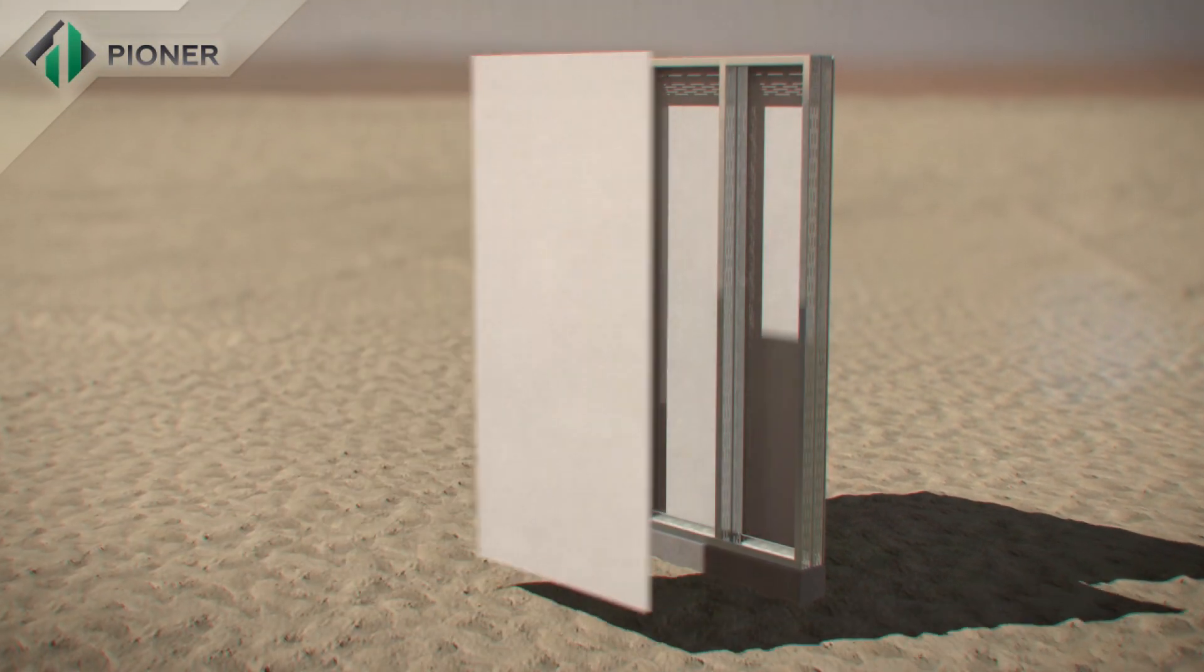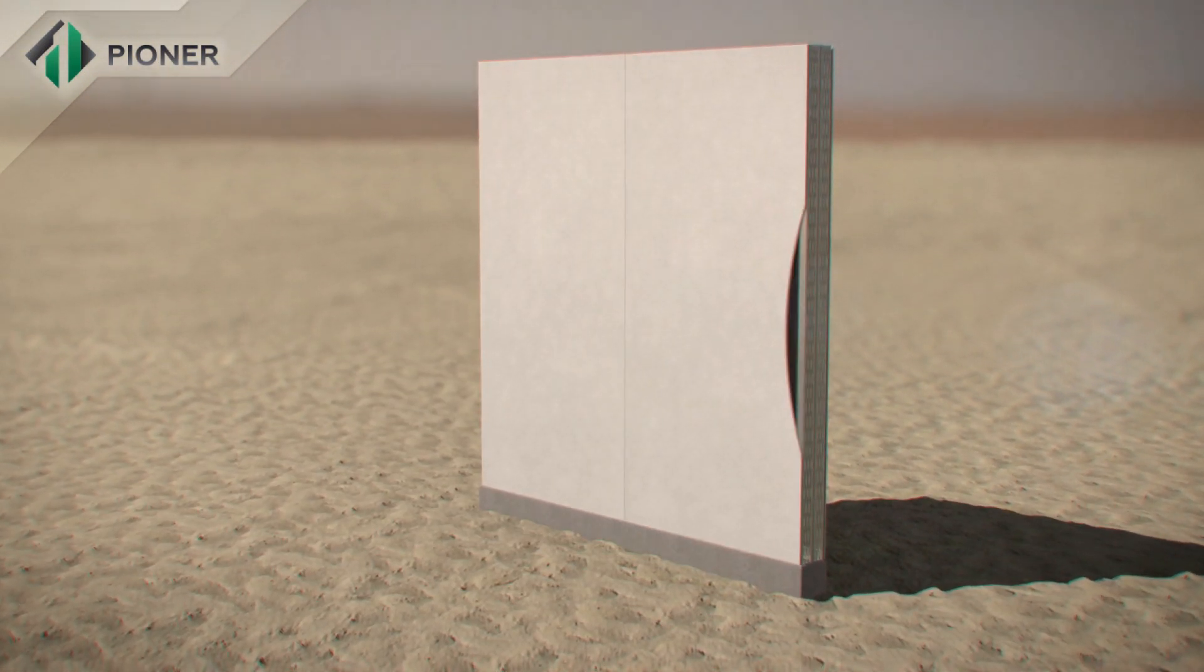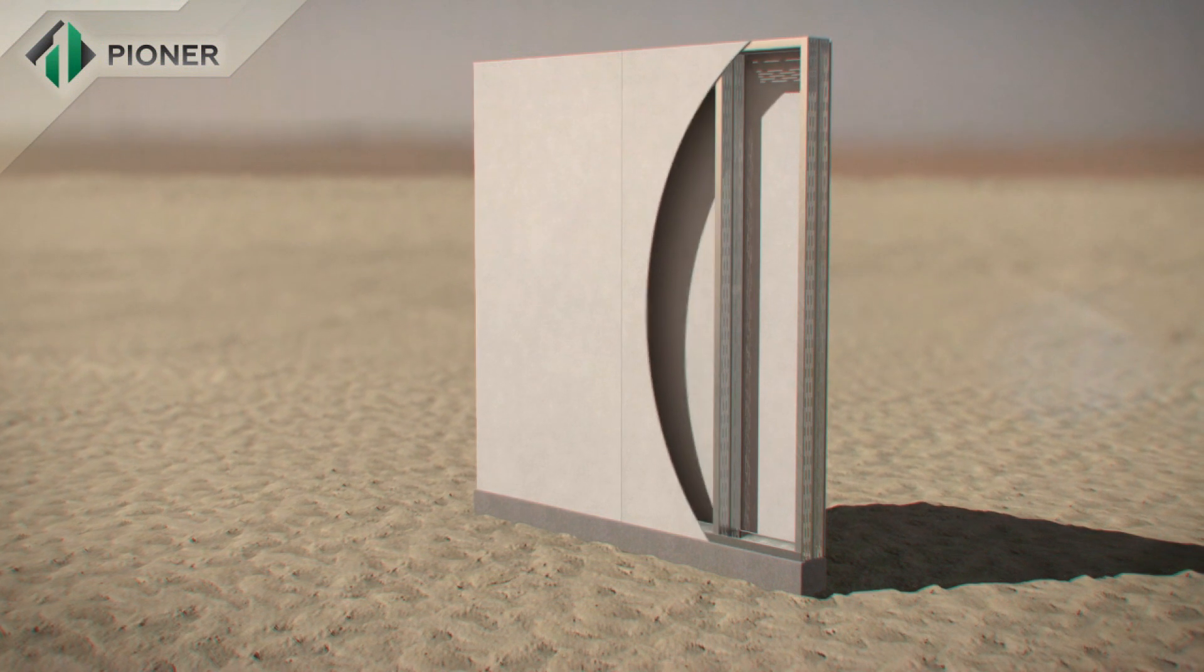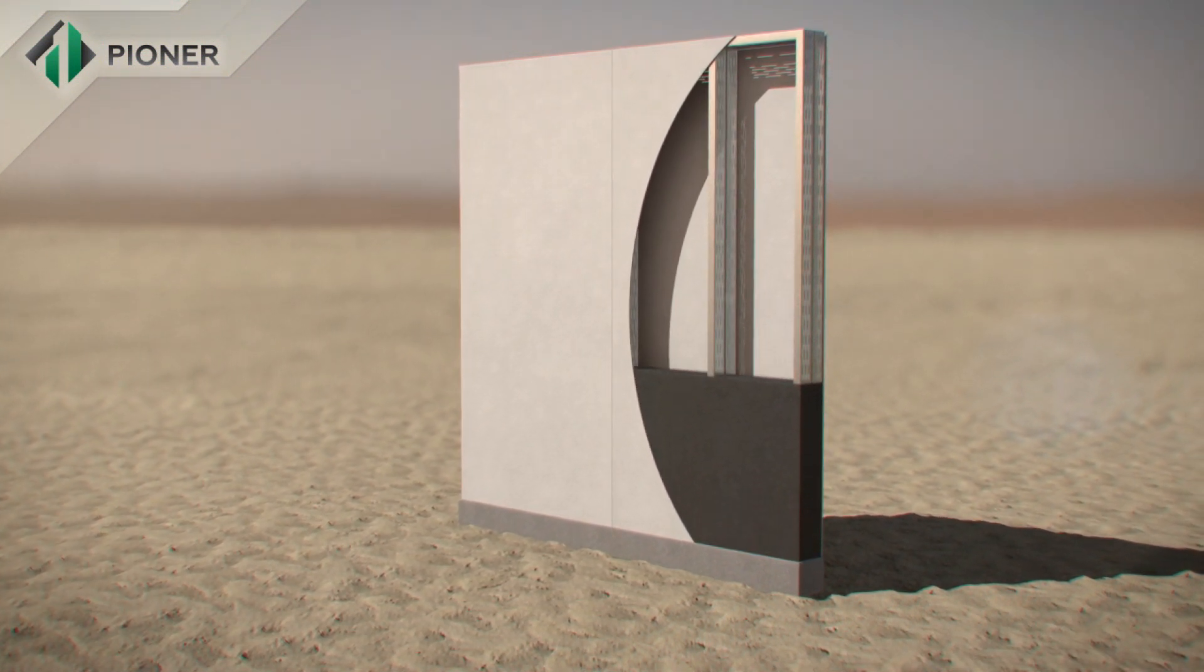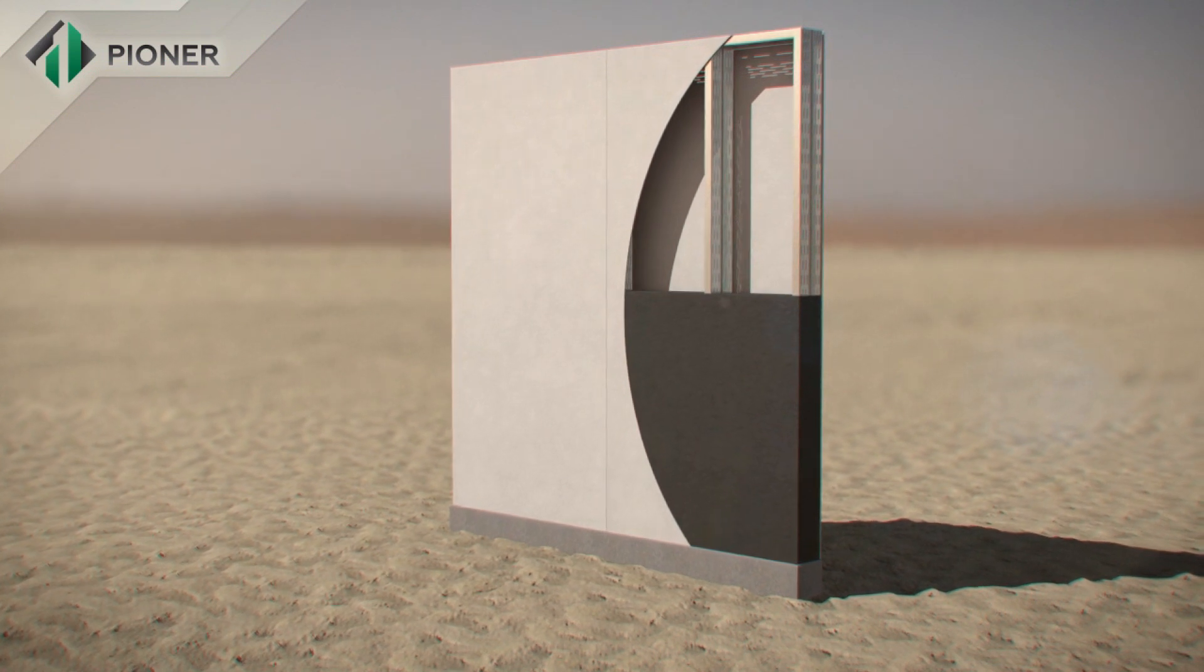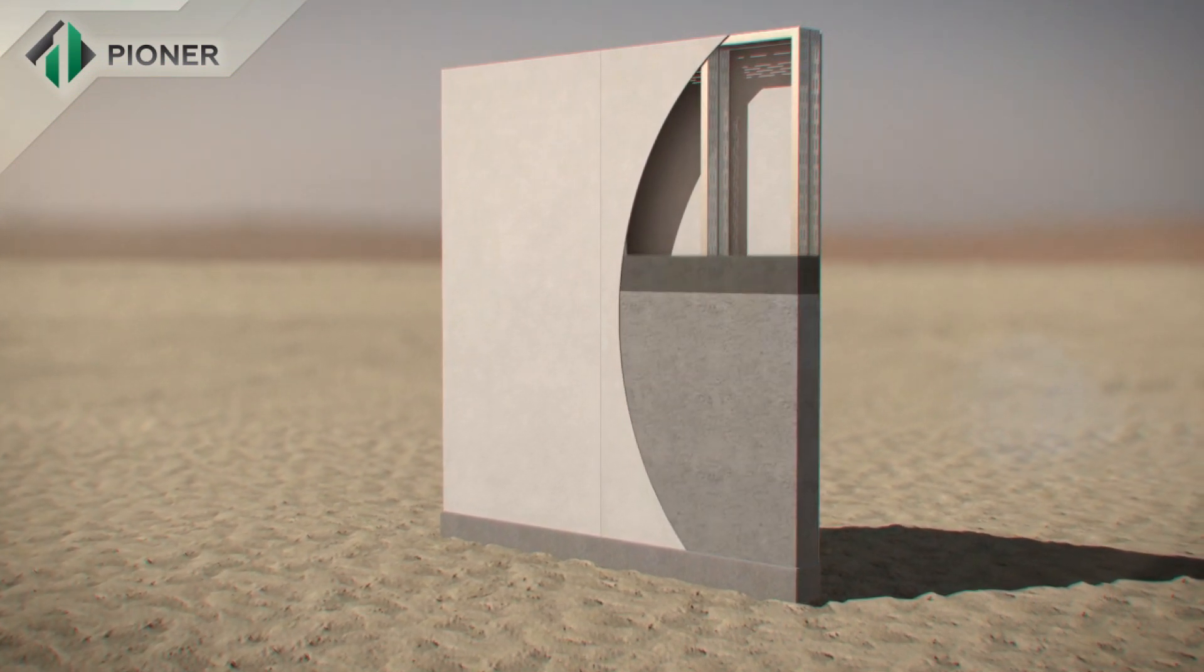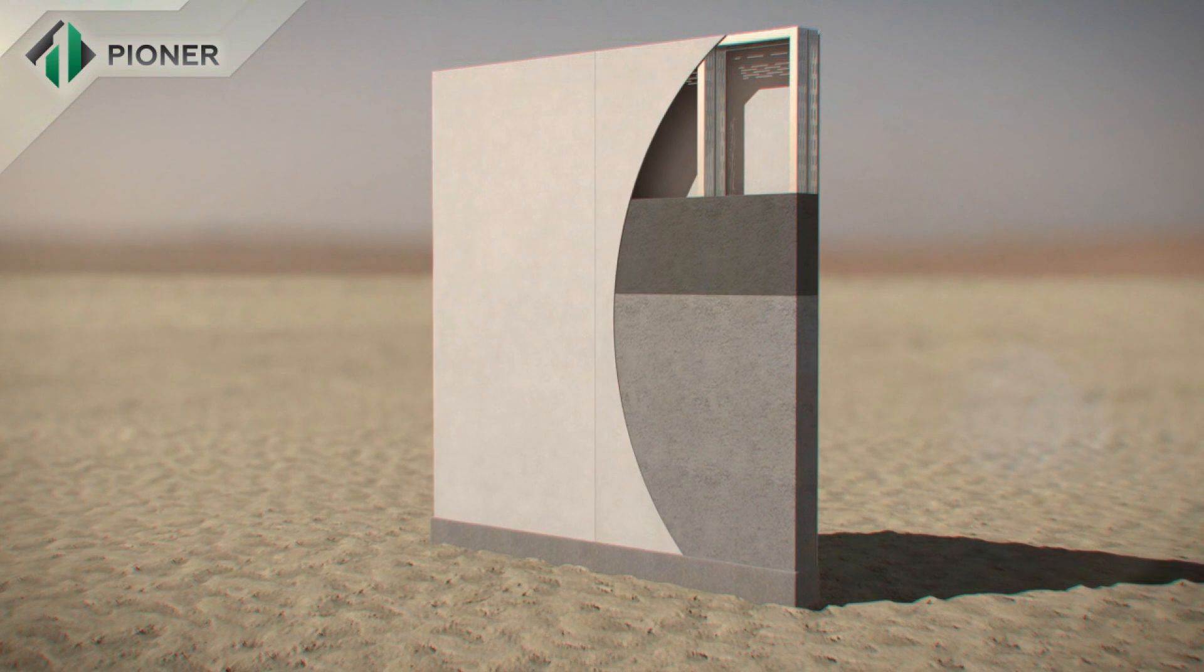A metal frame composed of bent galvanized profile mounted on a prepared foundation is the basis of Pioneer construction technology. Heavy combined fiber cement panels serve as permanent cast framework inside and outside of the wall.